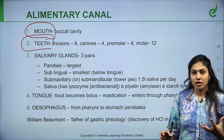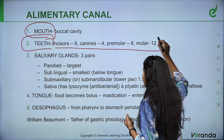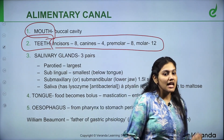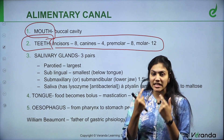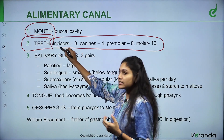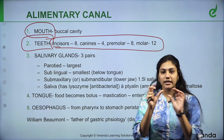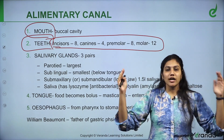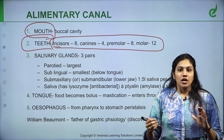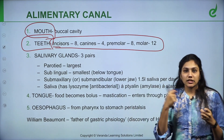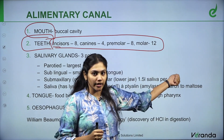So we have teeth types: incisors, canines, premolars, molars. In the center, we have incisors — totally eight numbers. Then, on the immediate side, canines; then premolars; and at the rear end, molars. This is the number of teeth in our buccal cavity.